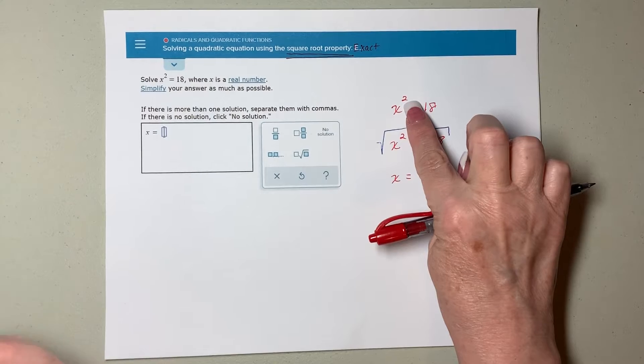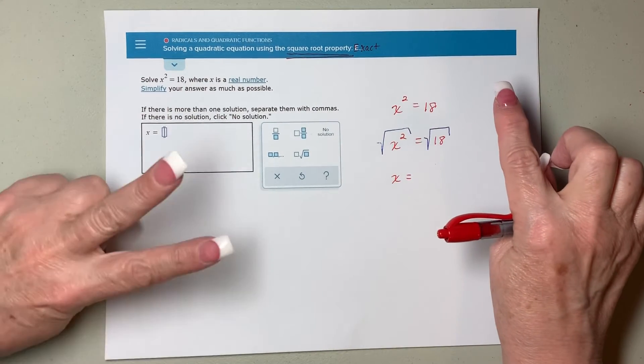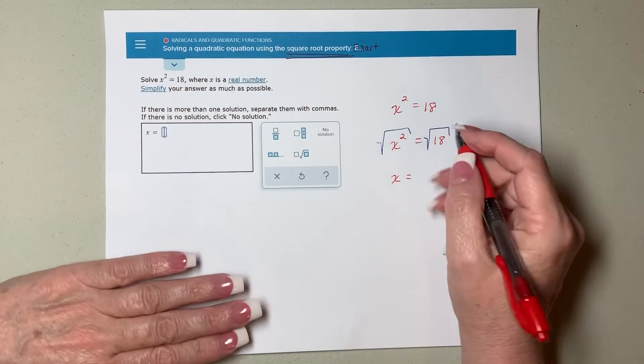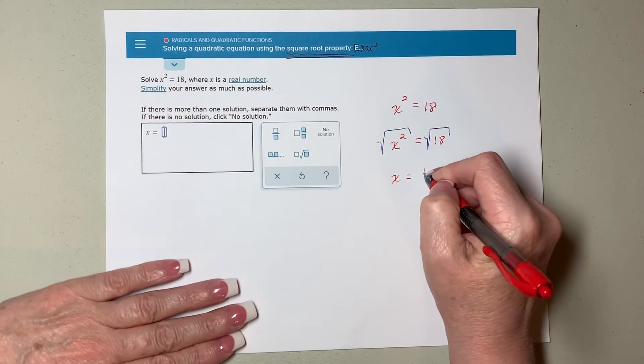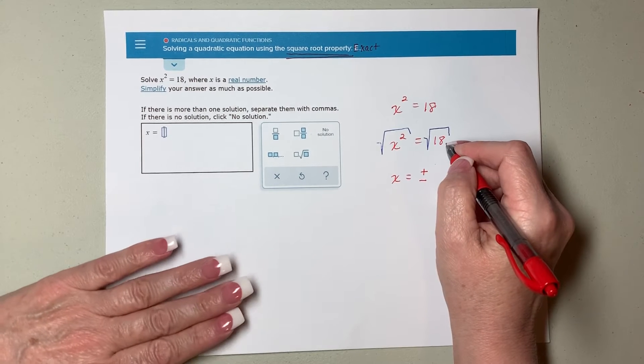However, this is a quadratic. Since there's an x squared on there, there should be two possible answers. Which means in this case, it's either going to be the positive value or the negative value of whatever the square root of 18 is.